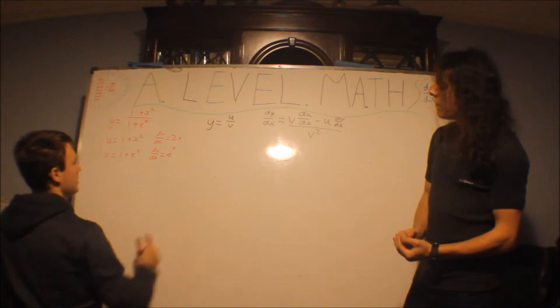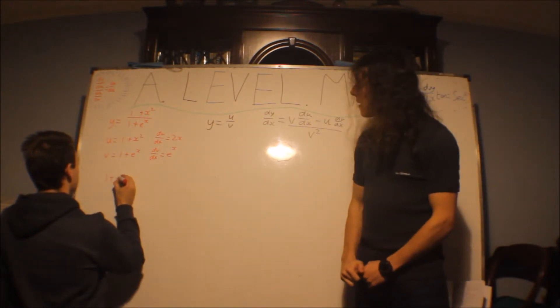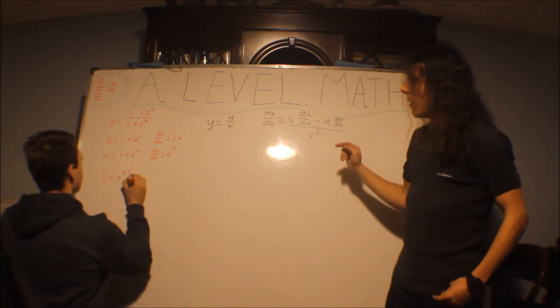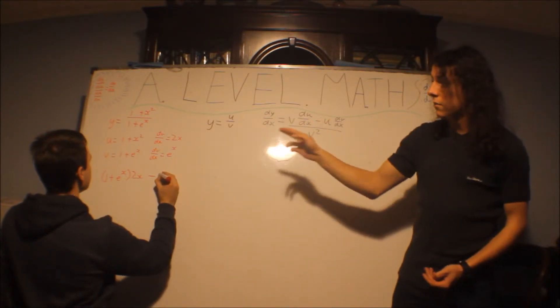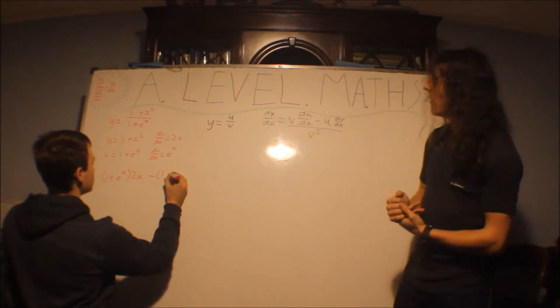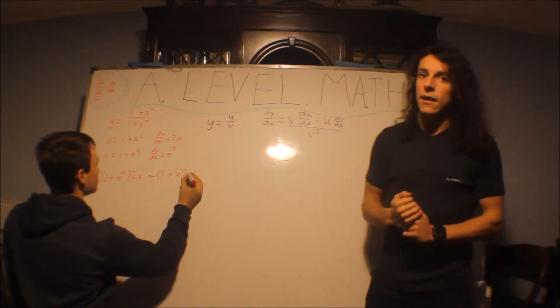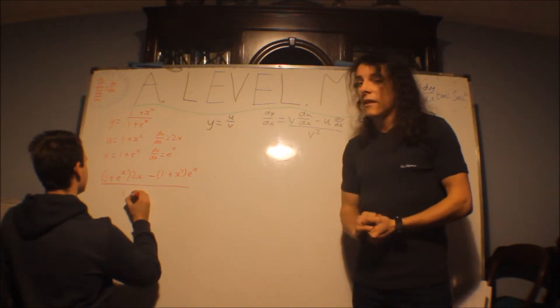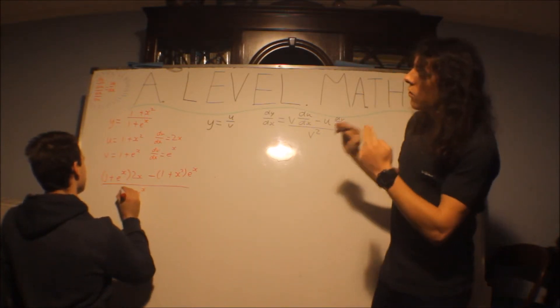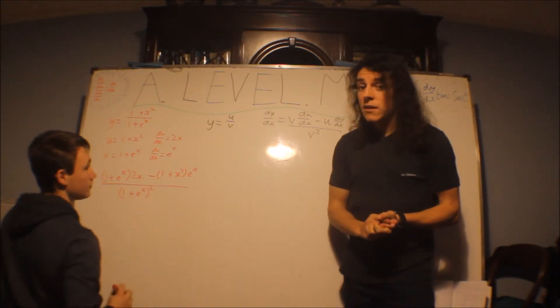So we've got v times du/dx. So we have v, which is one plus e to the x, times du by dx, which is just 2x, and take away our u, which is our numerator, so it's 1 plus x squared, times by e to the x, all over v squared, which is 1 plus e to the x squared.